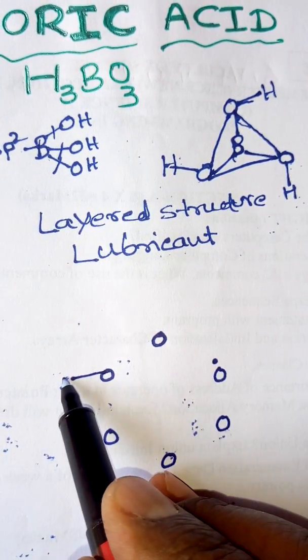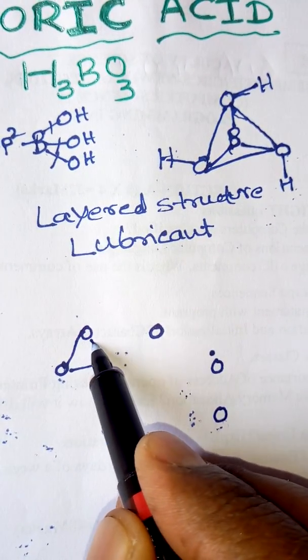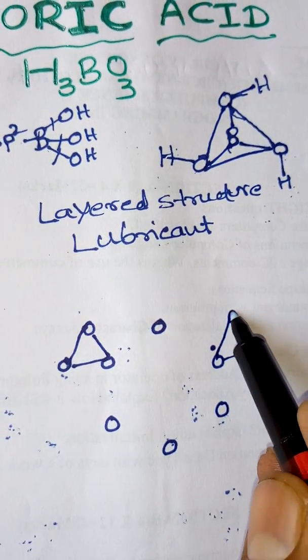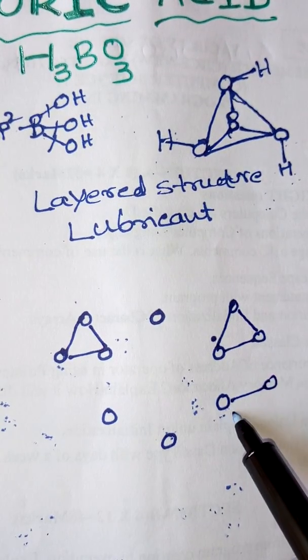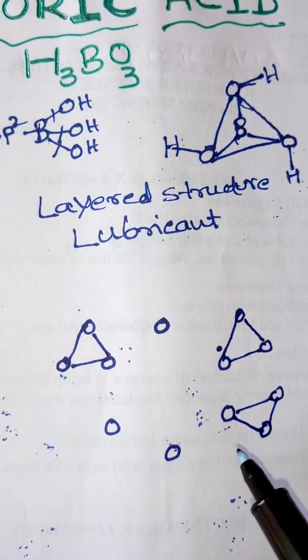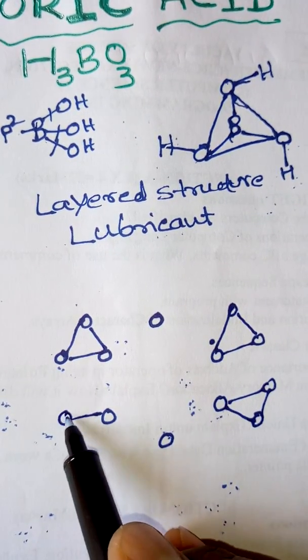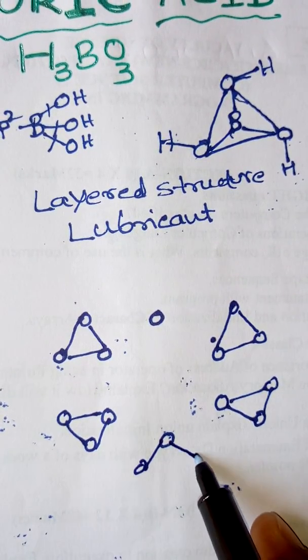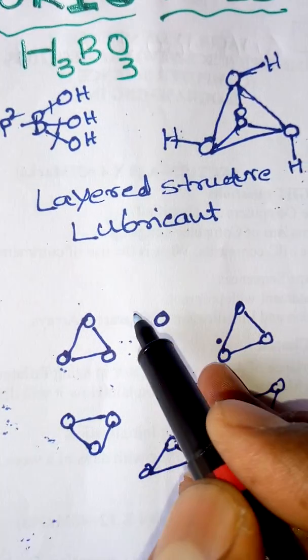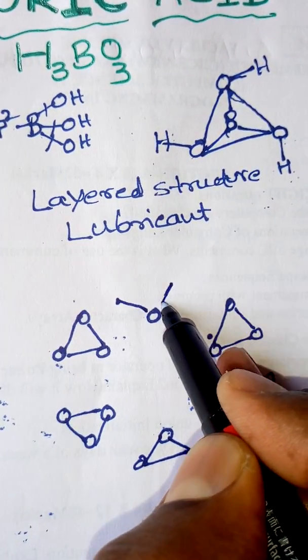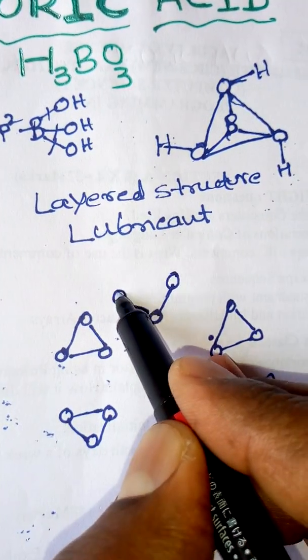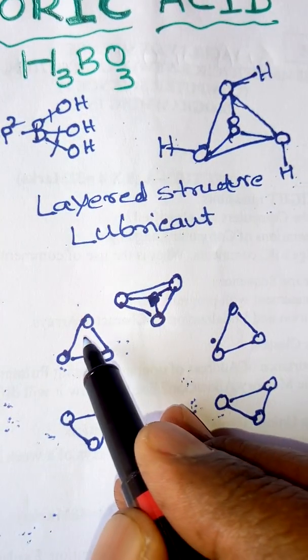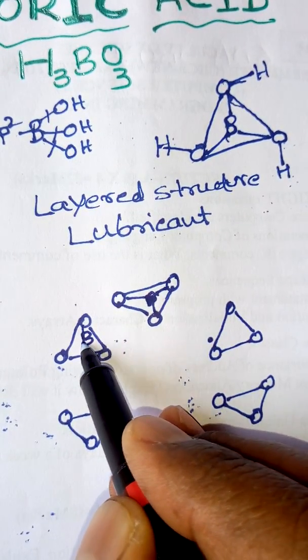Then we make triangles with these oxygen atoms like this. We draw the boron atoms in the middle of each triangle like this.